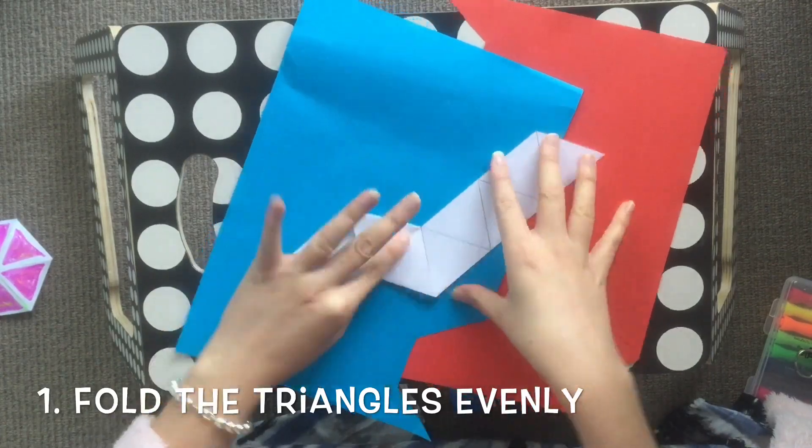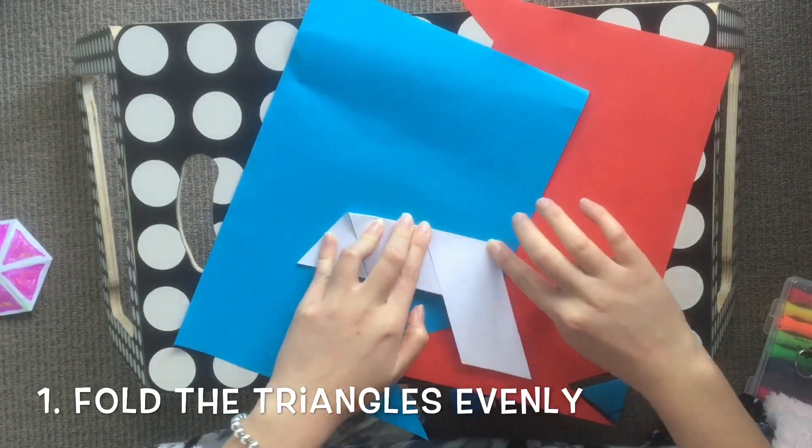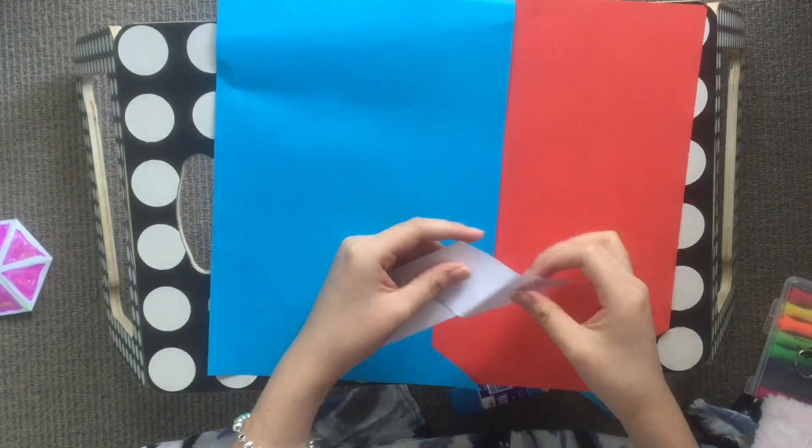When you're folding, try to use a fan effect by flipping the paper back and forth. Otherwise, your triangles might not fold out evenly.